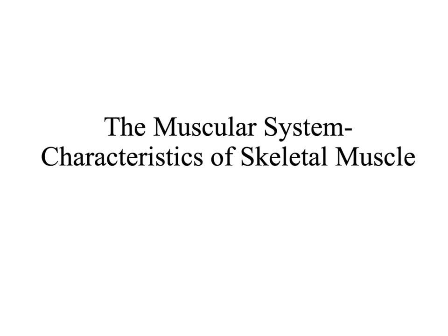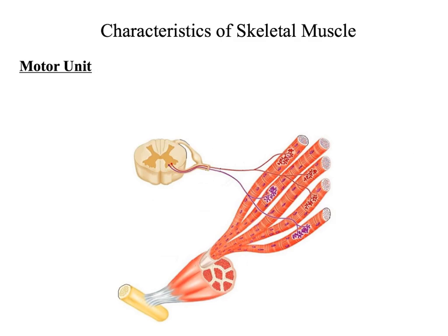In this lecture of the muscular system, we're going to talk about the characteristics of skeletal muscle. First, we have to remember that muscle is a unique tissue. What makes muscle tissue unique is that it has the ability to contract or shorten in length when stimulated by an electrical impulse. That electrical impulse, or action potential, will specifically come from a motor neuron.